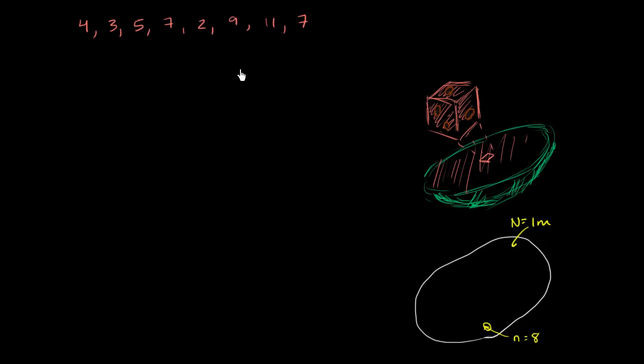Now let's think about what statistics we can measure. The first one that we often calculate is a measure of central tendency — the arithmetic mean. Here we're trying to estimate the population mean by coming up with the sample mean. So what is the sample mean going to be? We just add up these measurements and divide by the number of measurements we have.